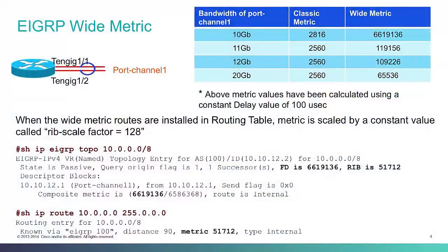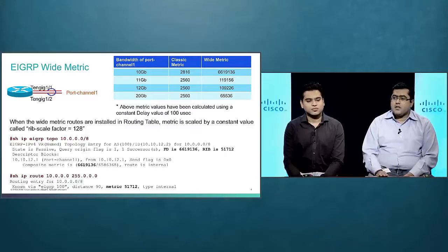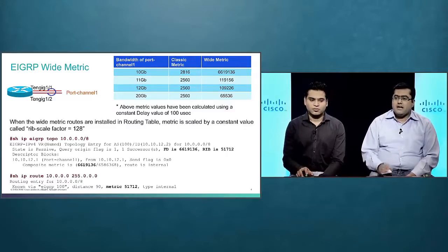I've heard about something called wide metric in EIGRP. Before we talk about wide metric, let's take an overview of what the legacy metric is and what its limitations were, plus why wide metric was invented. If we change the bandwidth of an interface to more than 10-gig values, the EIGRP metric remains the same. With the adoption of high-speed links, customers have started deploying interfaces with more than 10-gig values to get more throughput. With legacy metric, we have this limitation, and so wide metric was developed to overcome it.